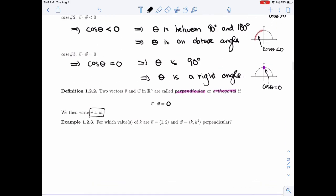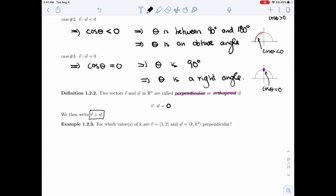Alright, so let's do one example of this. I want to know for which value of K, V and W are perpendicular. So the definition says that the dot product should be zero.